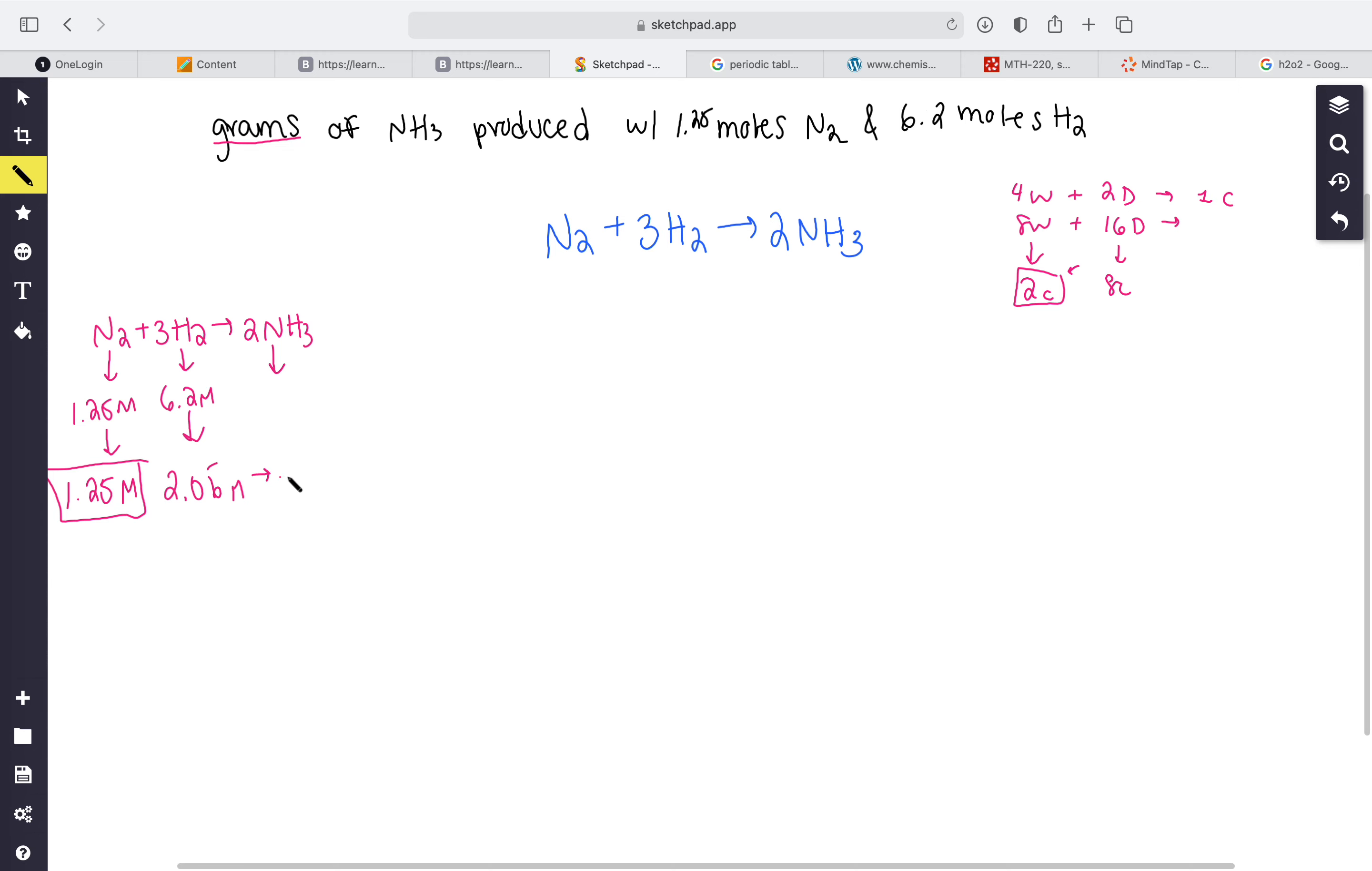Because that is the limiting reagent we're going to use that to solve and find out how much NH3 can be made. If 1.25 moles of N2 divided by one times - in one mole of N2 used you have two moles of NH3 made, that's where the dimensional analysis comes in and you end up getting 2.5 moles of NH3 made.